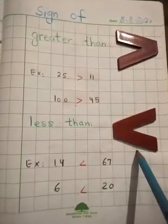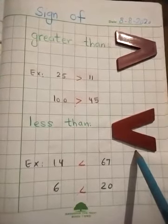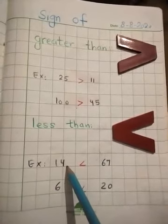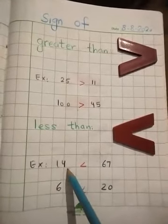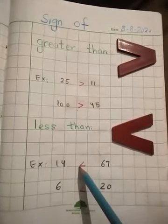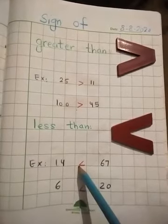This is the sign of less than. The numbers with less digits is always lesser. In both signs, the beak always points to the smaller number.